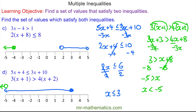You can see the region which is true for both is where x is less than negative 5, because if x is less than negative 5 it will be true for both the blue and the green inequalities.